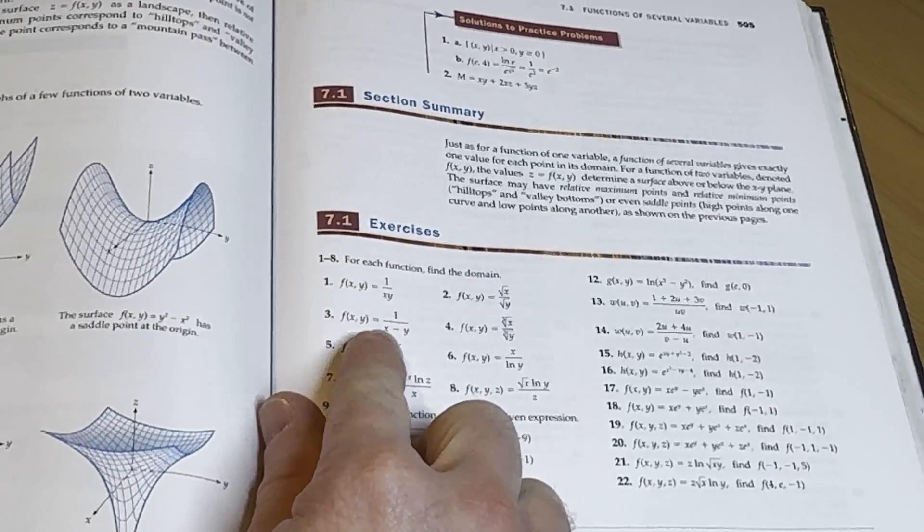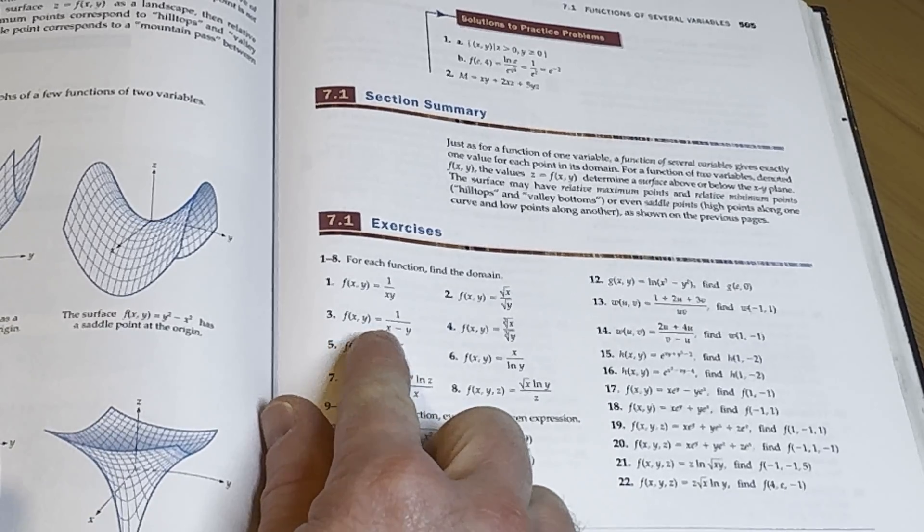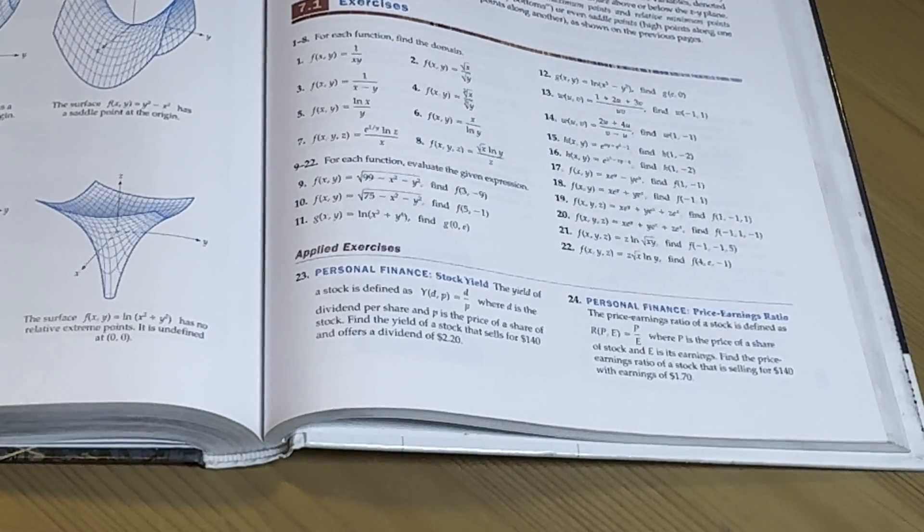So like here on number three, just x can't be equal to y, right? So it's a set of all ordered pairs such that that's true. So let's see what they do. I'm going to write down the answer to one of these like correctly, and then we're going to look in the back of the book and see how they do.